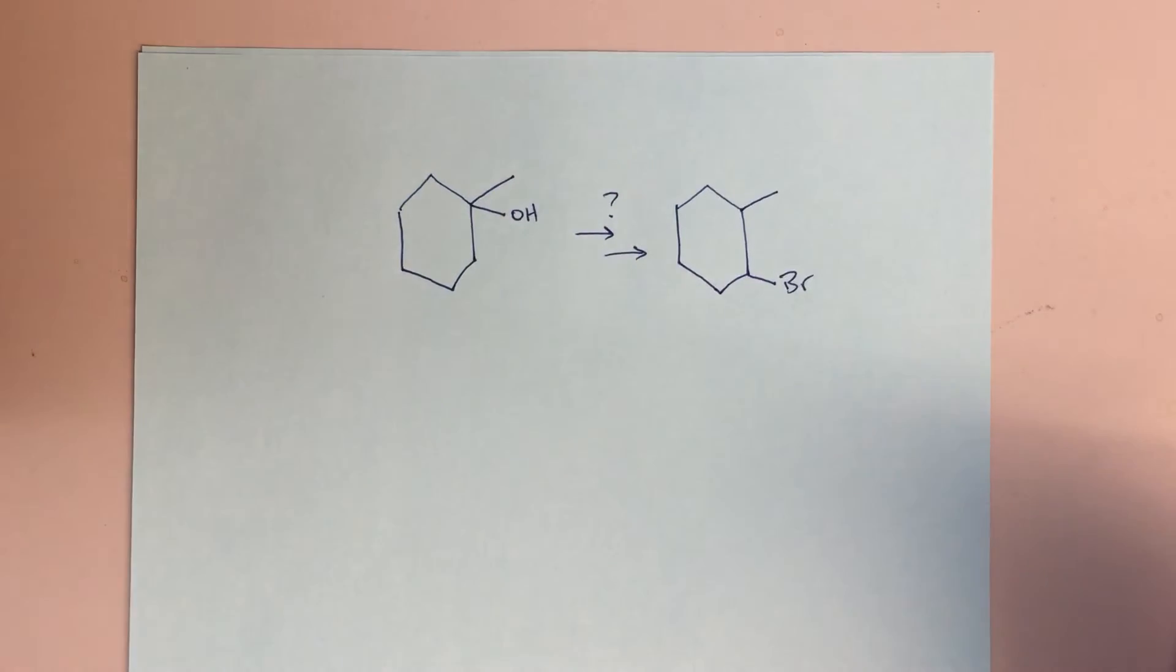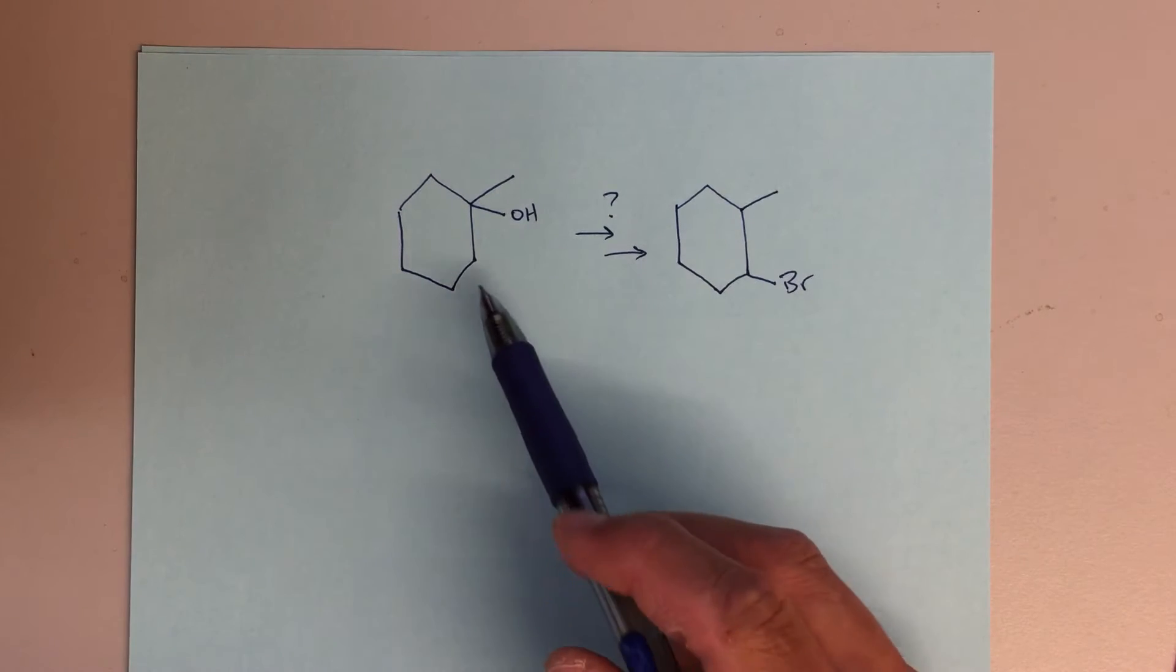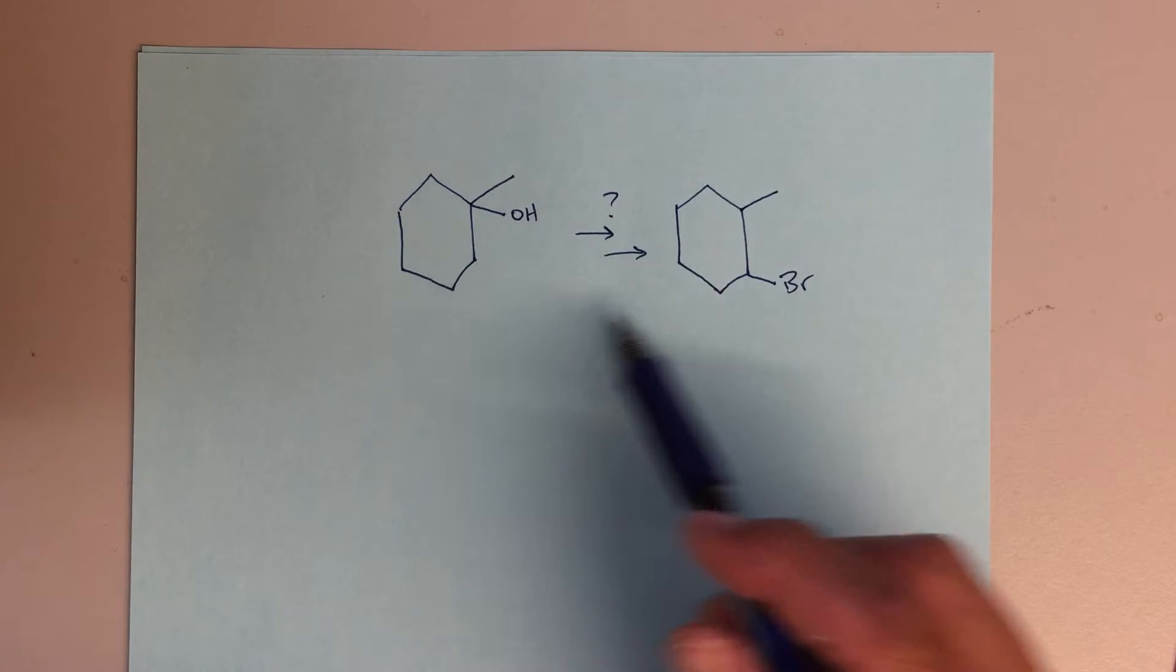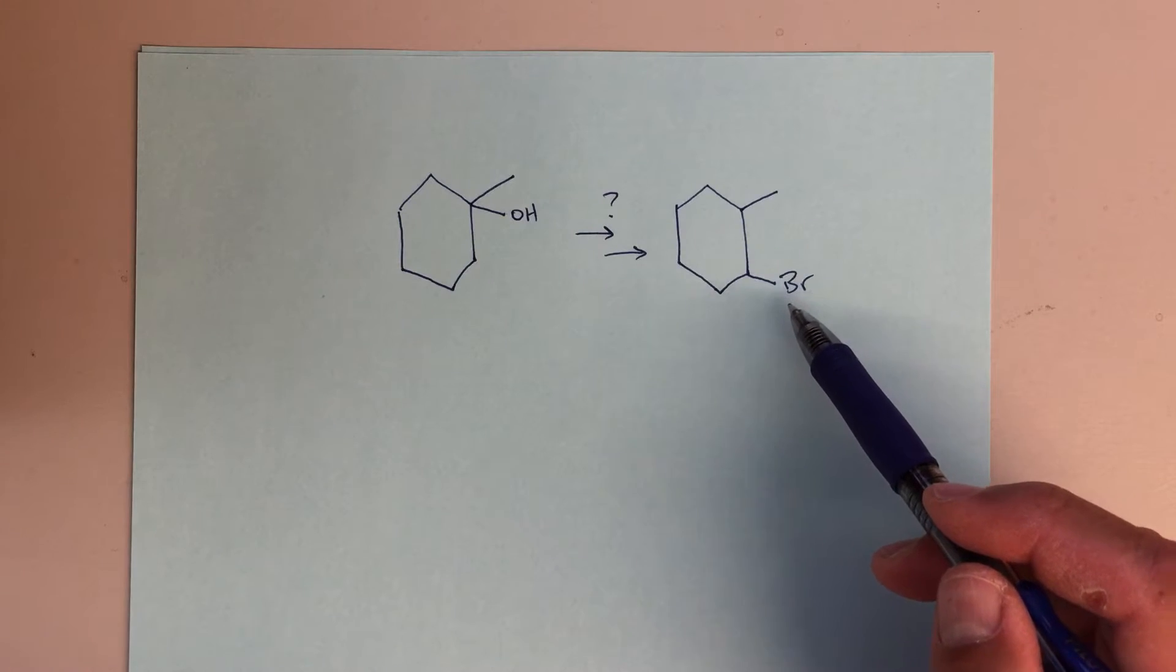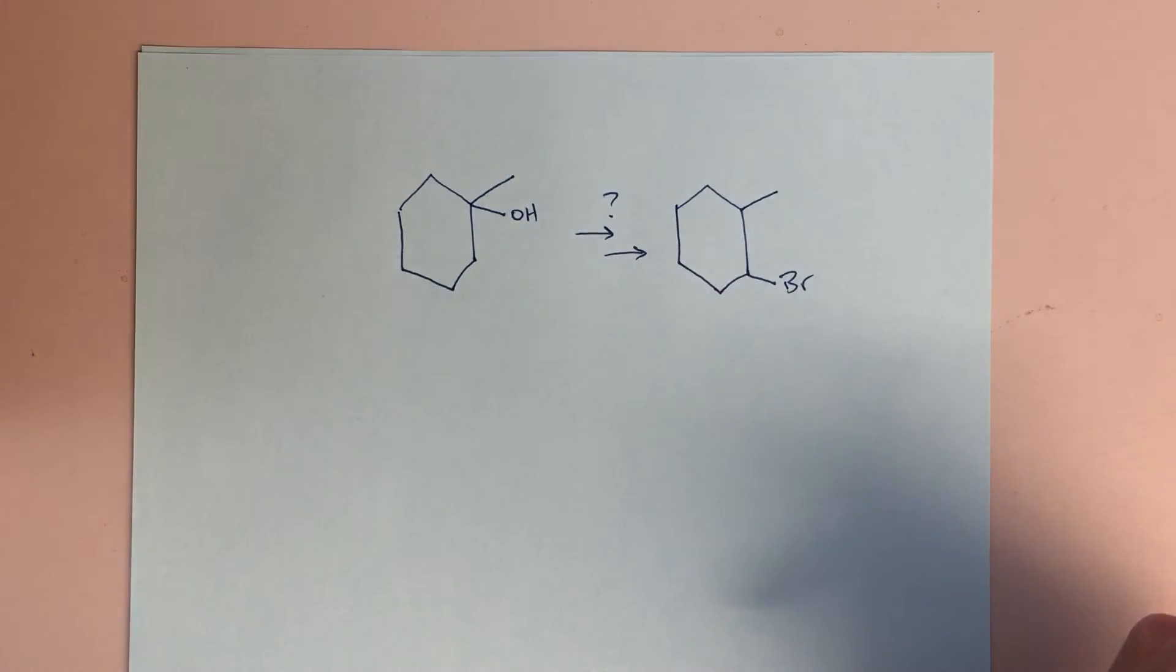Okay class, so this is the problem that we were looking at in class today, and that I figured most of us were struggling with. I wanted to talk about it through this video and also talk about the strategies involved with solving a problem like this. Here we're asked to turn 1-methyl cyclohexanol into 1-bromo-2-methyl cyclohexane, and I've shown those two products here.